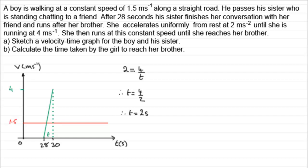Now this girl then runs at a constant speed of 4 meters per second until she catches her brother. Now when the sister catches her brother, they will both have traveled exactly the same distance.